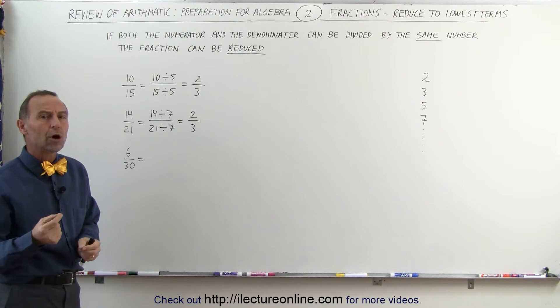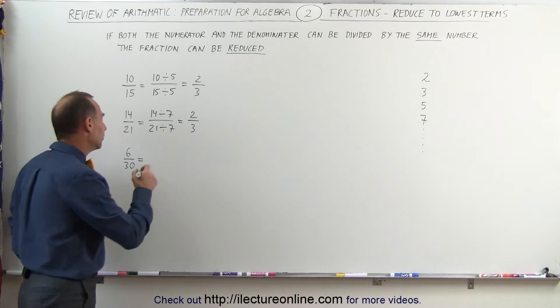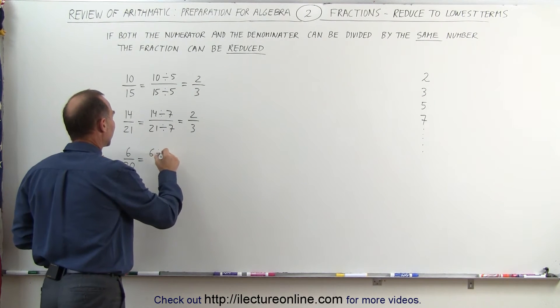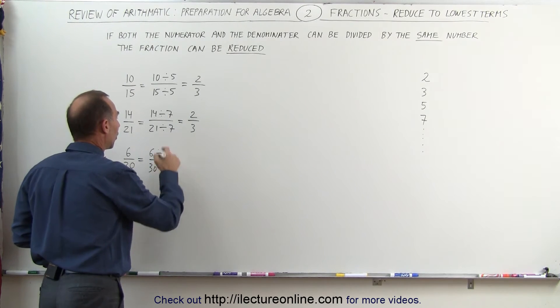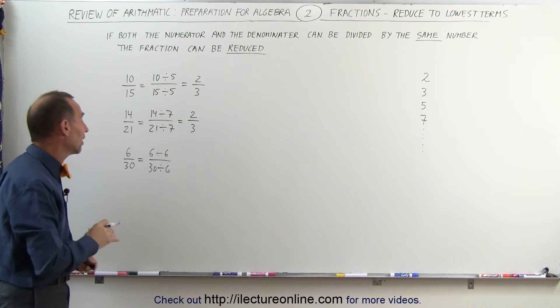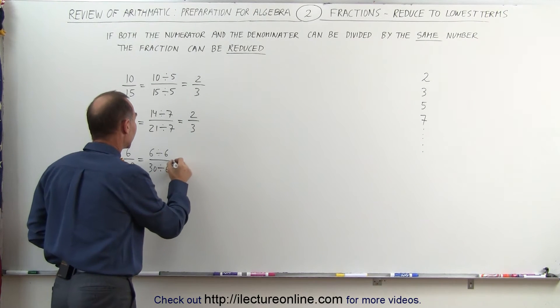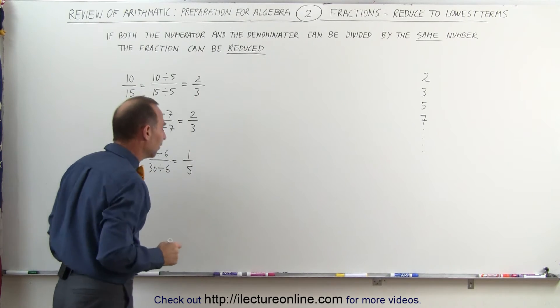6 is what we call the greatest common factor. And so we can write this as 6 divided by 6, and 30 divided by 6. Always remember that you have to divide both the numerator and the denominator by the very same number. This can then be written as 1, and 6 goes into 30, 5 times or 1 fifth.